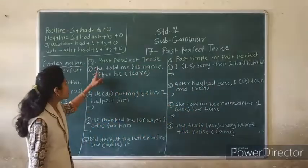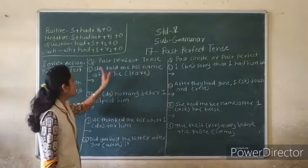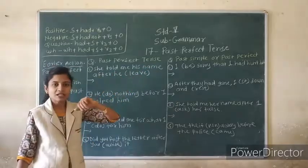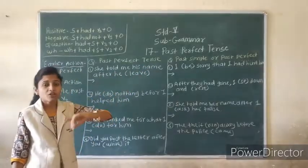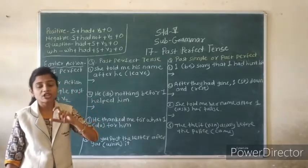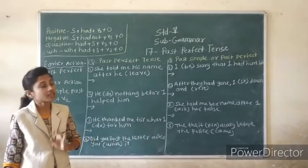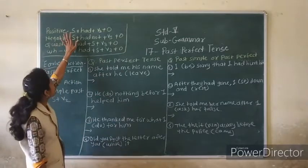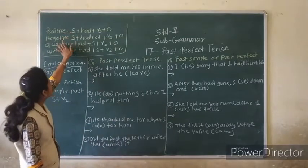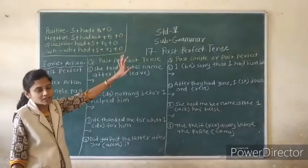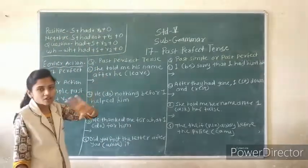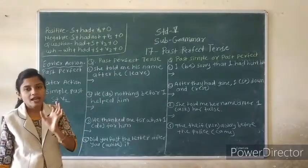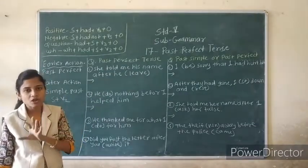Question 1: 'She told me his name after he...' — the verb in bracket is 'leave'. Where there is a bracket, you use the formula: Had plus verb 3. Leave — verb 3 is 'left'. So: He had left.